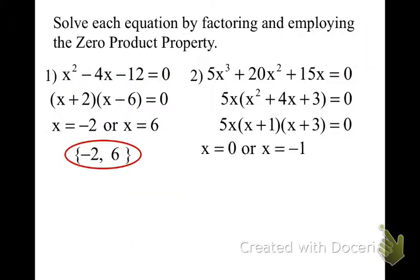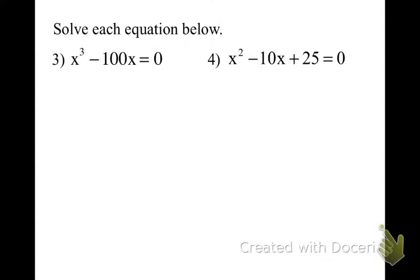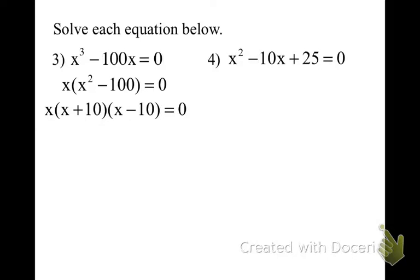Let's try some that are a little bit trickier. For the next one, we take out a GCF of x, and then we're left with x squared minus 100 inside — that's a difference of squares. We factor it to get x times x minus 10 times x plus 10 equals 0. My solutions are x equals 0, x equals negative 10, and x equals positive 10.